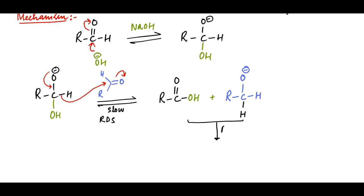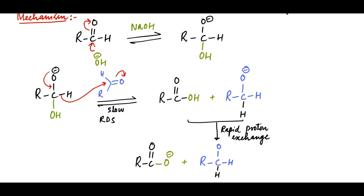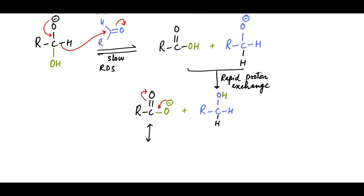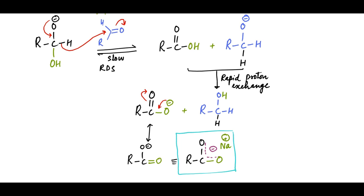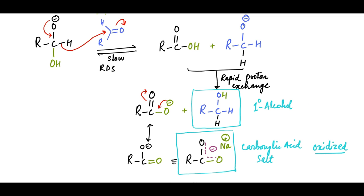In the final step of the reaction, a proton is transferred from the acid to the alkoxide ion for reasons of stability, thus giving the corresponding salt of carboxylic acid and primary alcohol. Therefore, the first aldehyde molecule in black is oxidized to carboxylic acid, and the second aldehyde in blue is reduced to primary alcohol.